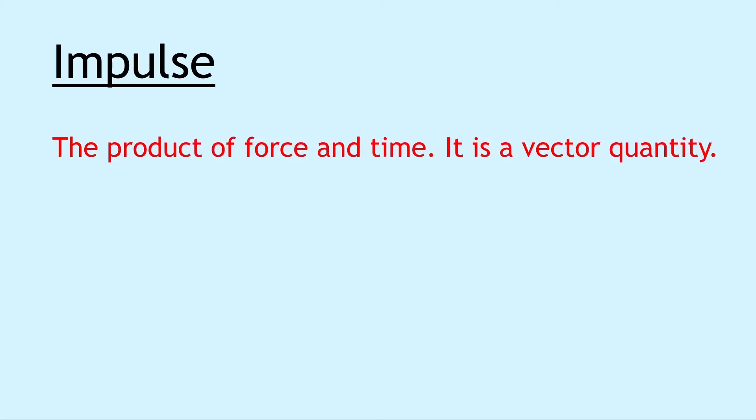Lastly we have impulse, and impulse is simply the product of force and time. It is also a vector quantity which means direction and magnitude are both important. Impulse is also equal to the change in momentum of an object and is given by the area under a force time graph.